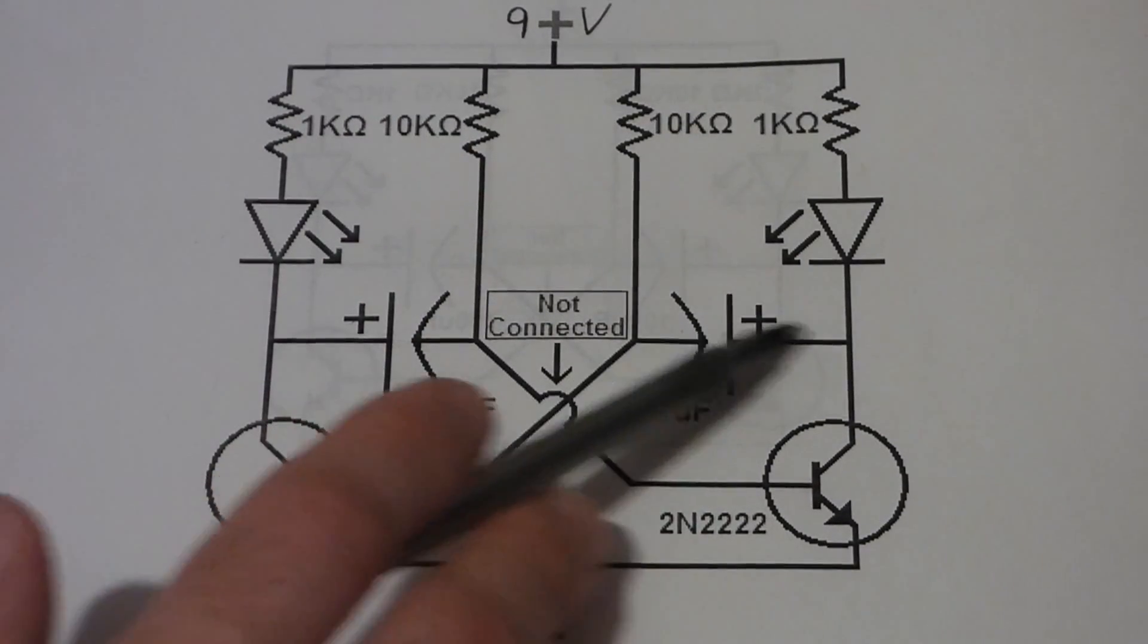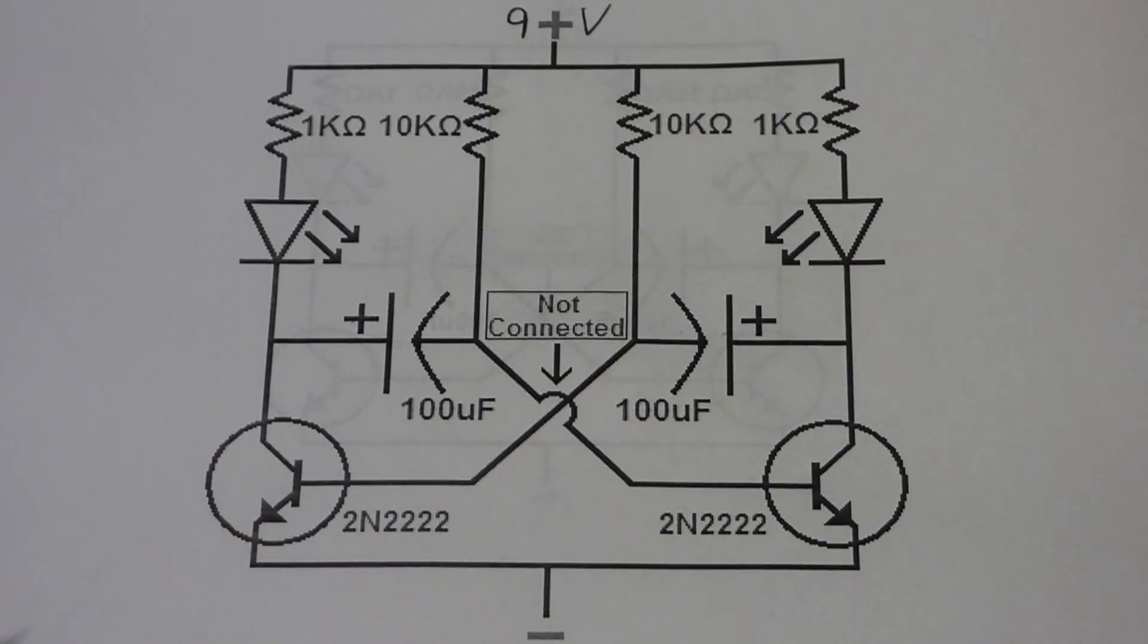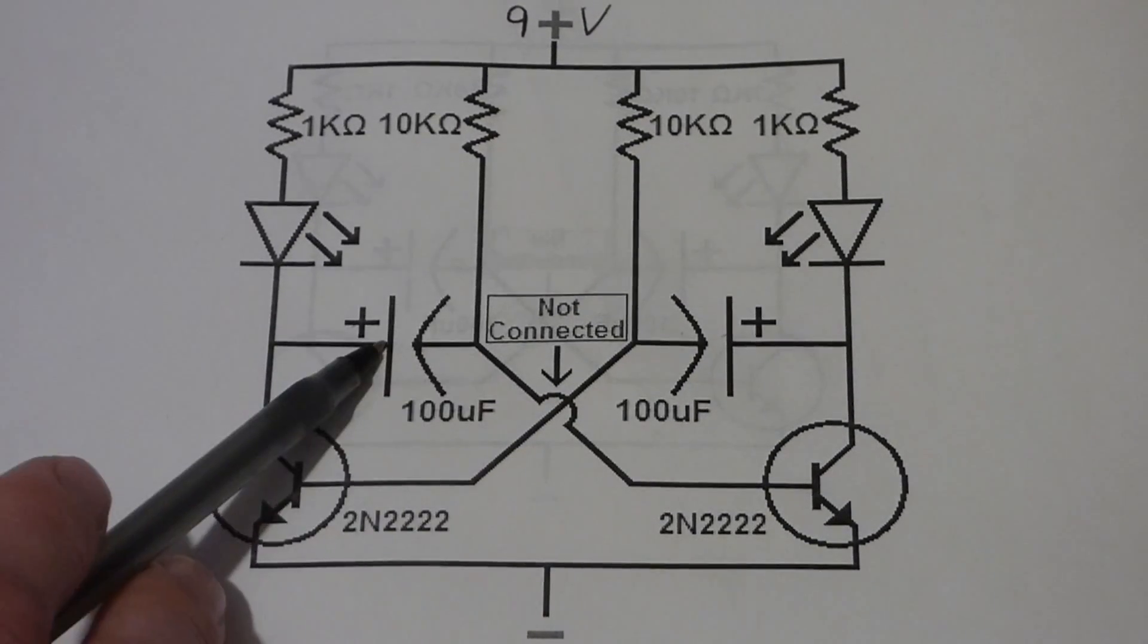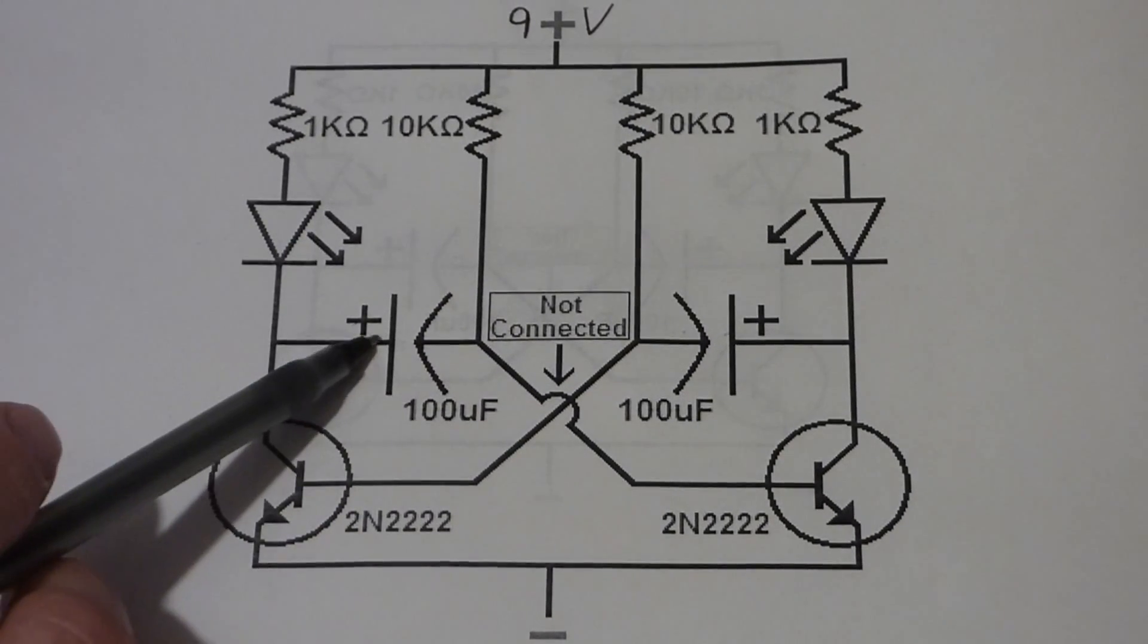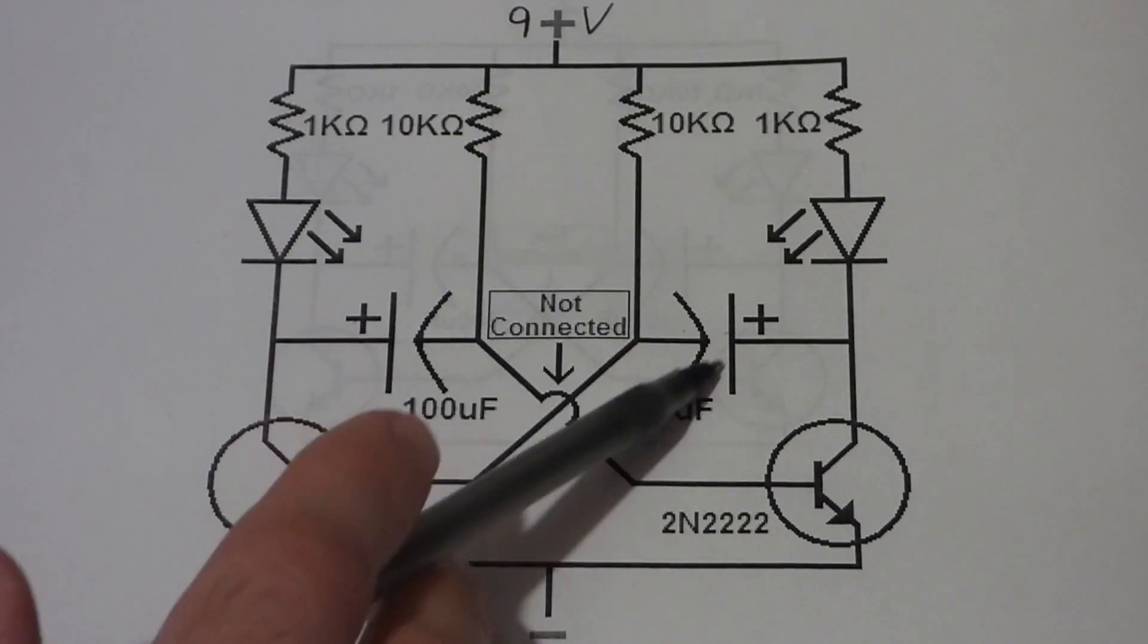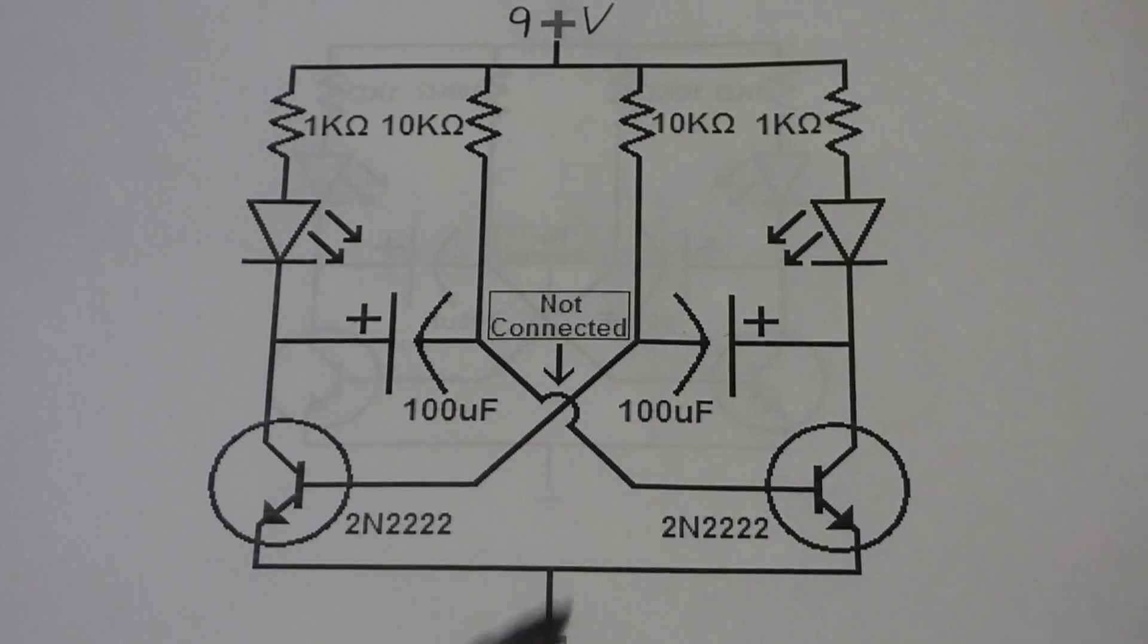That will allow this capacitor to start charging again. It's also got the negative here and so this one will start charging while this capacitor discharges. And while this capacitor is discharging there's also a path for current to come through here because if you remember this one's charging so it turns this transistor on.